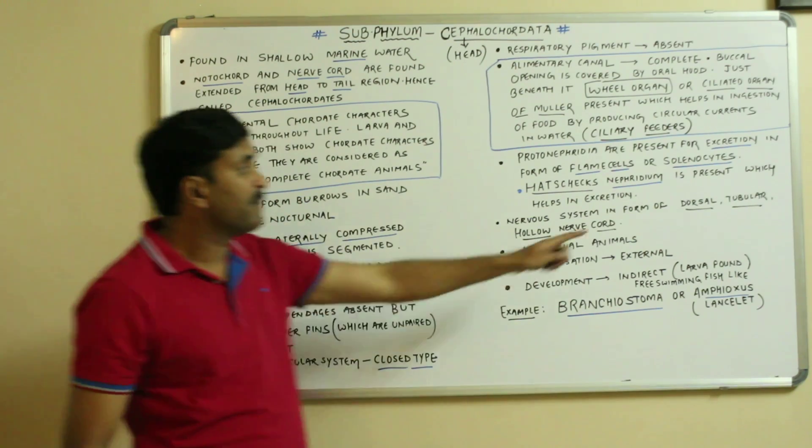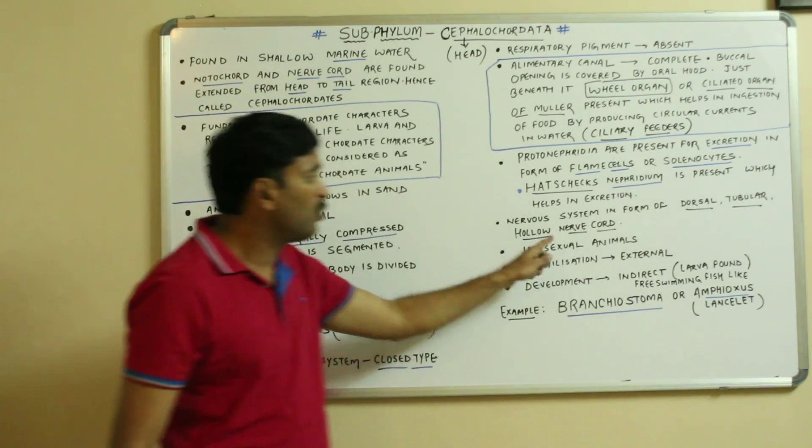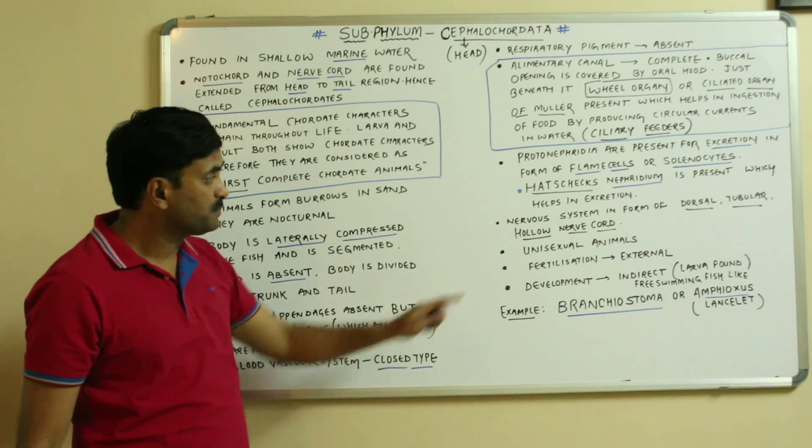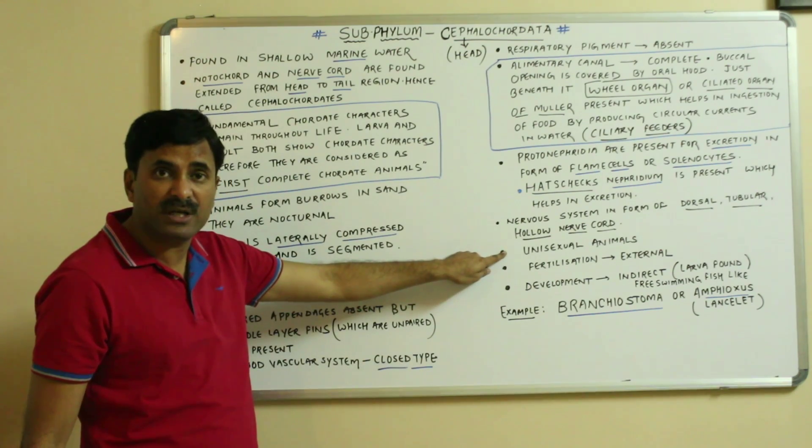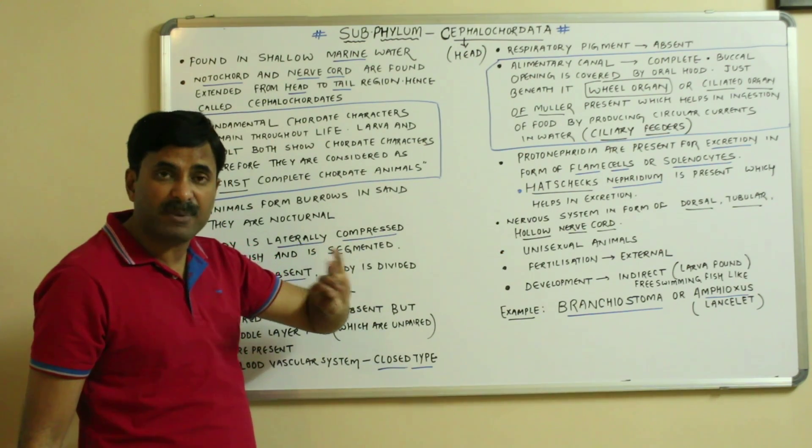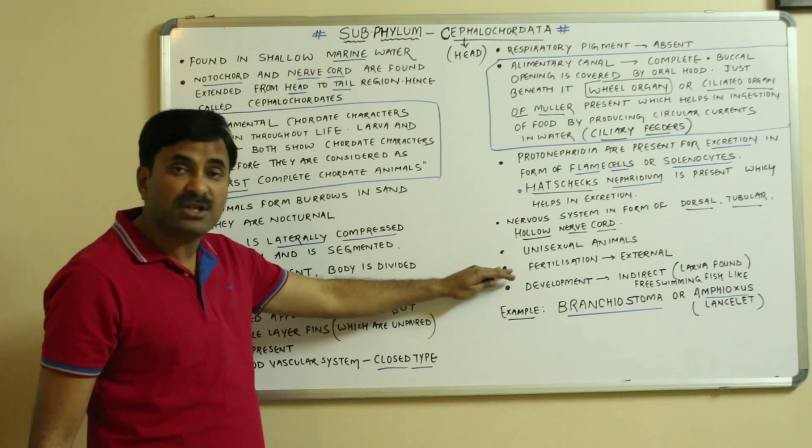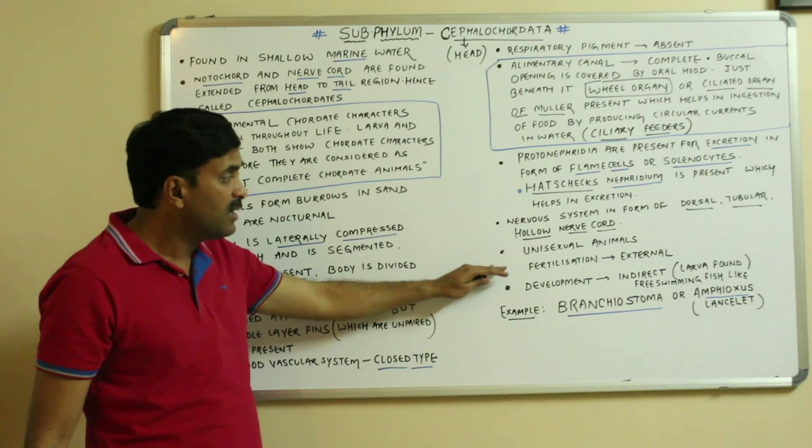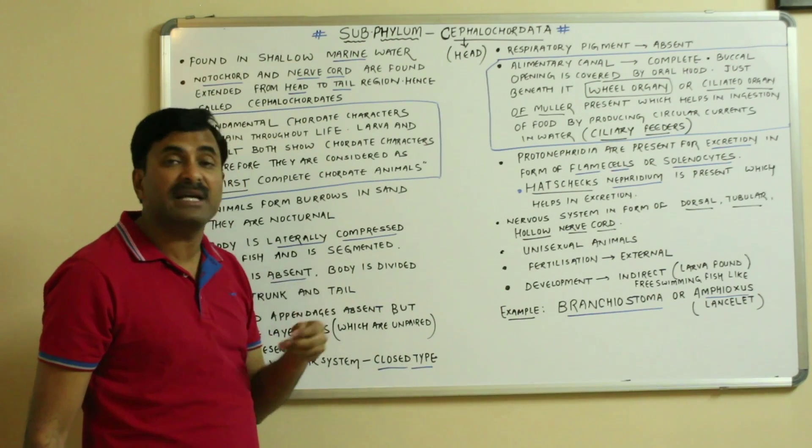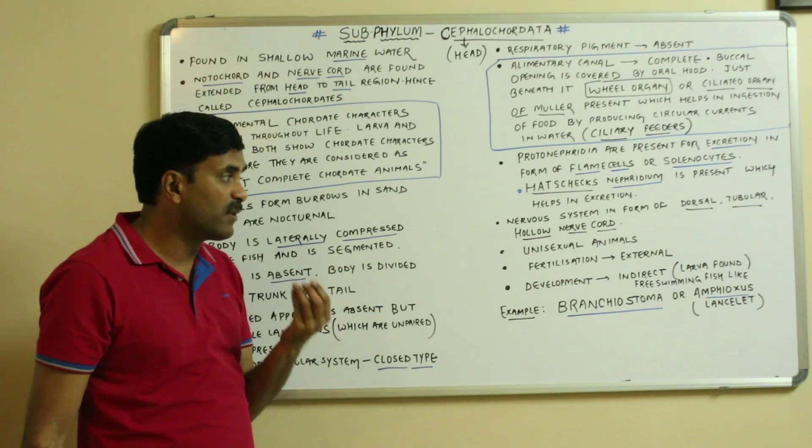They are unisexual organisms meaning sexes are separate - male and female are separate. Fertilization is external and development is indirect with a free-swimming fish-like larva.